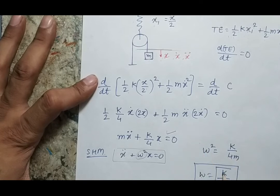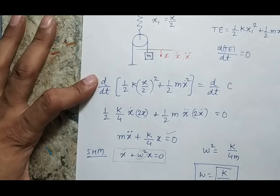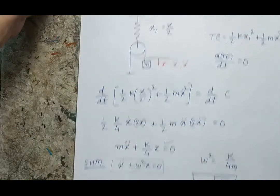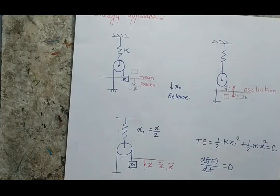When I compare this expression with standard SHM — that is, x double-dot plus omega squared times x equals zero — omega squared is coming out to be K by 4M. So my omega is the square root of K by 4M. If you go back and compare this with Newton's approach, there also we got that omega equals the square root of K by 4M. So in this way, both approaches give the same result.